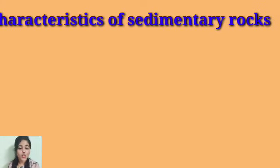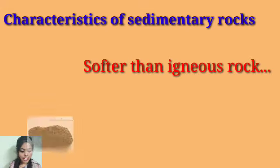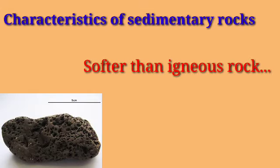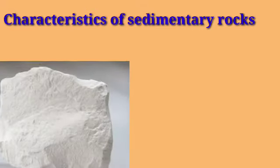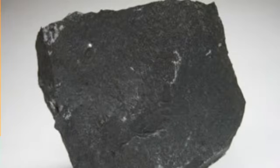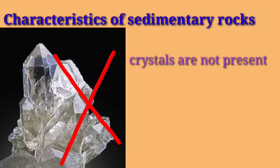Now let's look at the characteristics one by one. Number one: sedimentary rocks are much softer than igneous and metamorphic rocks. Limestone and chalk can be easily broken, whereas granite and basalt cannot. Number two: unlike igneous rocks, sedimentary rocks do not have any crystals.